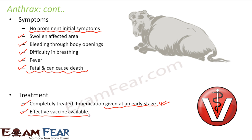An effective vaccine is available, which can prevent this disease. When you give a vaccine to an animal against anthrax, the antibodies will fight against Bacillus anthracis whenever it tries to attack the body, and the animal will not get the disease. So vaccination helps in prevention.